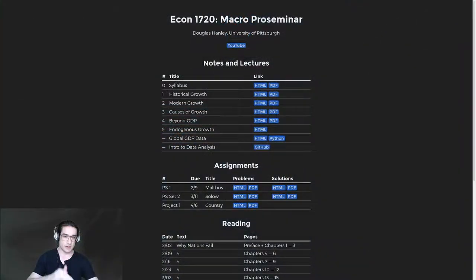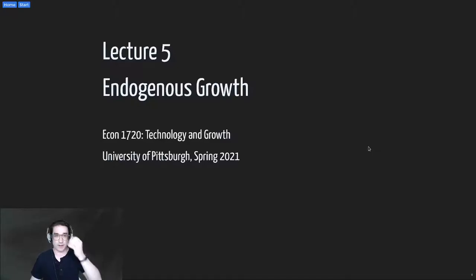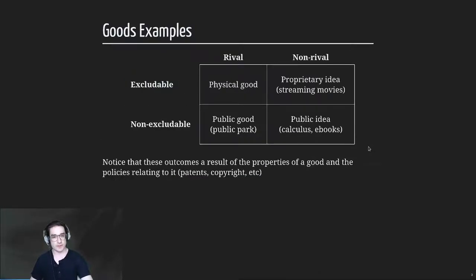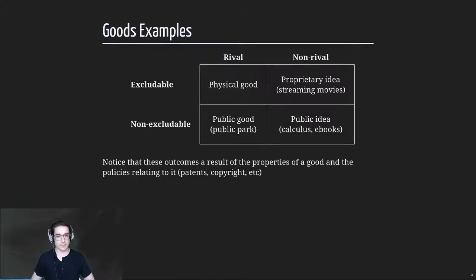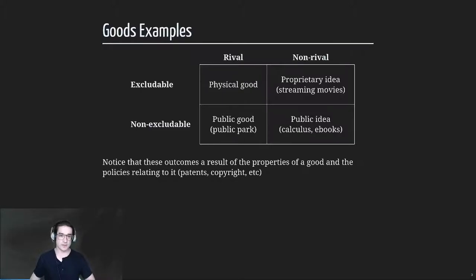Let's jump to the slides — Endogenous Growth, Lecture 5. We went through the notion of rival versus non-rival and excludable versus non-excludable. Rival means only one person can use the good at a time, which is just not true of ideas the way it is of physical goods. Excludable means you can prevent people from using it — with a physical good you can prevent theft, and social norms and regulations enforce that.